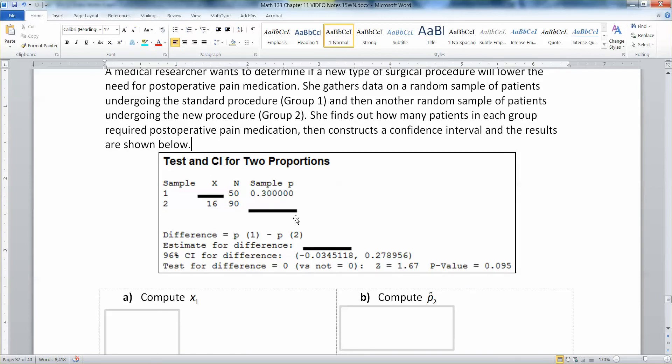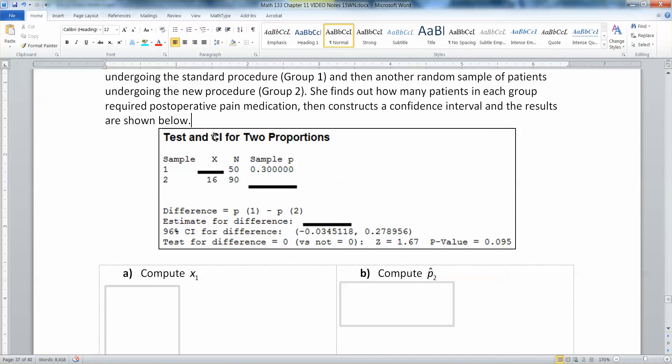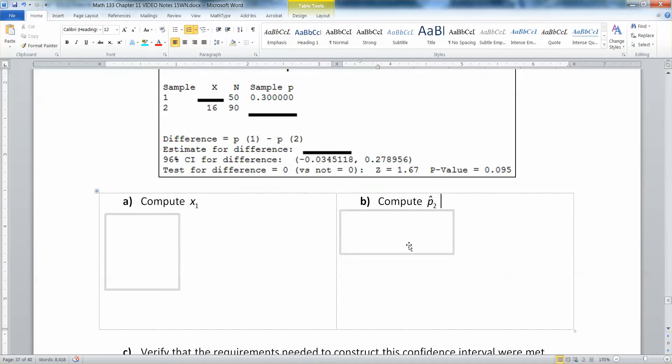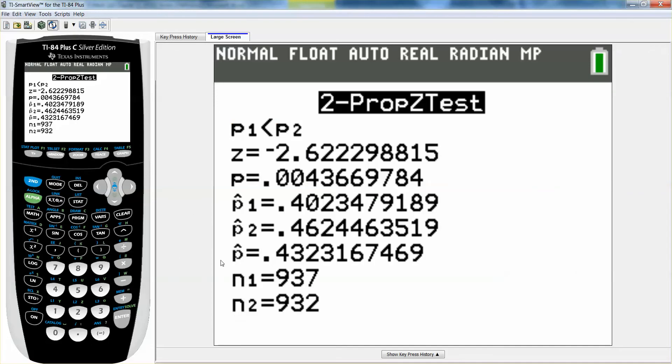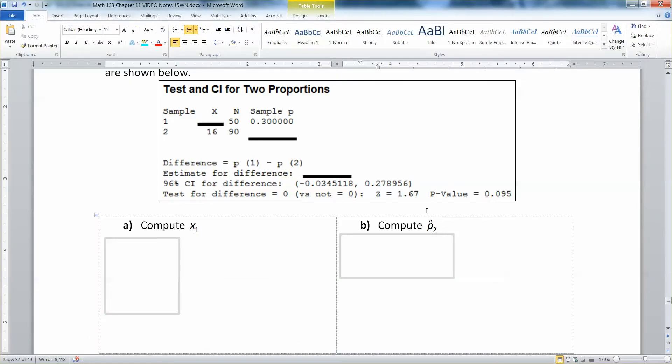I blacked out some of those results just to mess with you. You can see here it says it's making a test and a confidence interval for two proportions. I've blotted some stuff out that we're going to have to calculate. Let's start with letter B. We're going to compute P2 hat. If you remember, P2 hat is X2 over N2, and X2 and N2 are given: 16 and 90. So all we need to do is take 16 and divide it by 90, and we have 0.17 repeating.